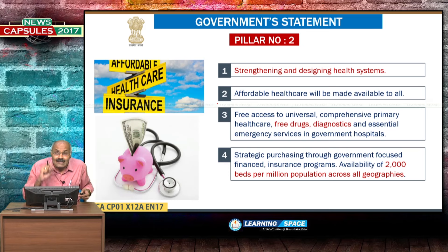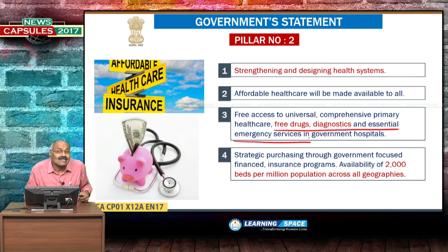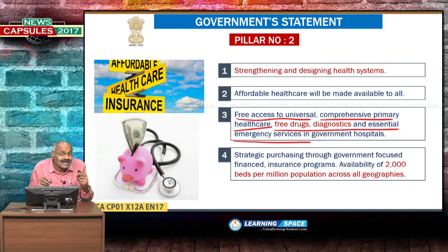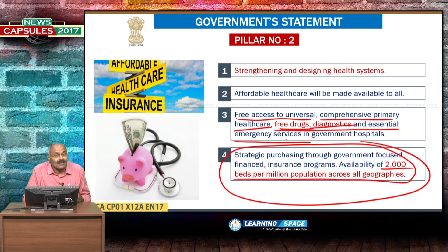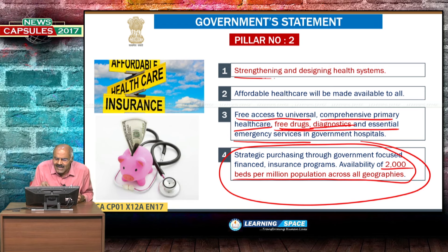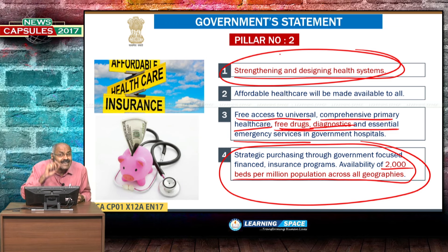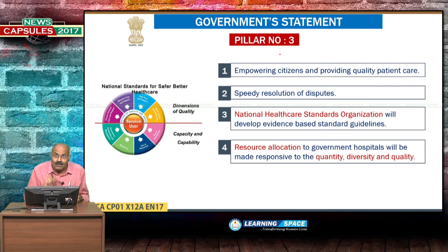The second pillar promises free drugs, diagnostics and essential emergency services. The goal is free access to universal, comprehensive primary health care, along with free drugs and diagnostics. Additionally, availability of 2,000 beds per million population across all geographies, irrespective of state or area, will be ensured. The most important aspect of the second pillar is strengthening and designing health systems with free drugs, diagnostics, and free access to universal, comprehensive primary health care.